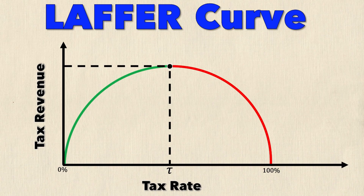It's obviously somewhere between 0% — because the tax revenue at 0% would be $0 — and 100%, because at a tax rate of 100% nobody's really going to want to work. So it's somewhere in between, but that all depends on the shape of the Laffer Curve. Is it steep at the beginning? Does it have a skew to the left or to the right? These are questions the government has to look at, and it's different for every country.